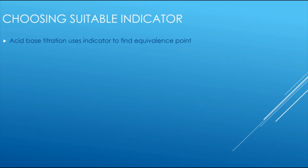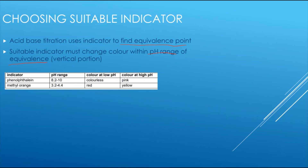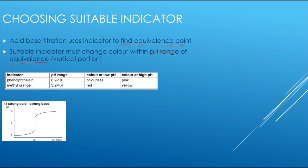Acid-base titrations use indicators to find the equivalence point. You need to pick an appropriate indicator whose colour change falls within the pH range of the vertical portion — the equivalence region. Different indicators change colour at different pH ranges. The two common examples in A-level chemistry are phenolphthalein and methyl orange.